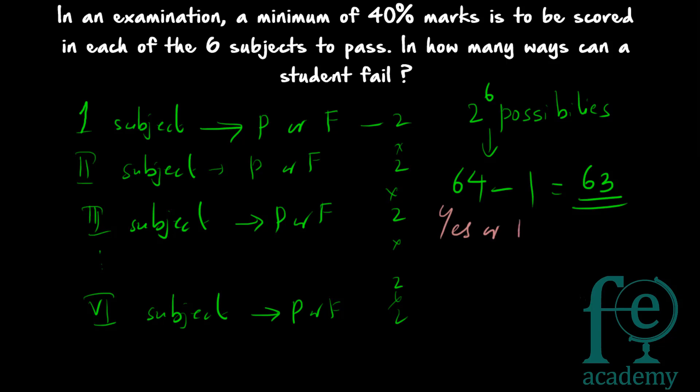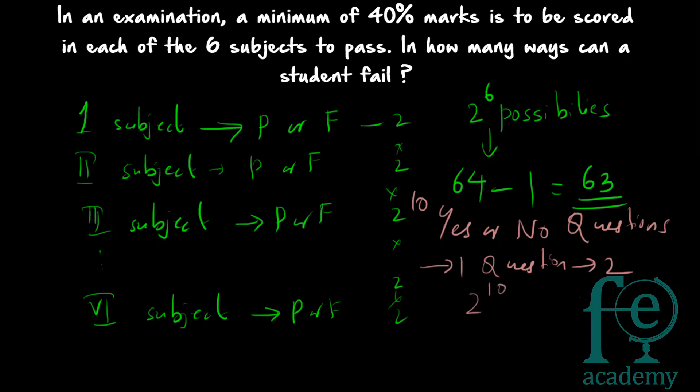There are 10 yes-or-no questions. In how many ways can these questions be answered? Each question has 2 possibilities — yes or no. The first question can be answered in 2 ways, the second in 2 ways, the third in 2 ways, and so on. So for 10 questions, you multiply 2 ten times, giving 2¹⁰ ways. All these are multiplicative — find the possibilities for each instance and multiply them all to get the total number of ways.